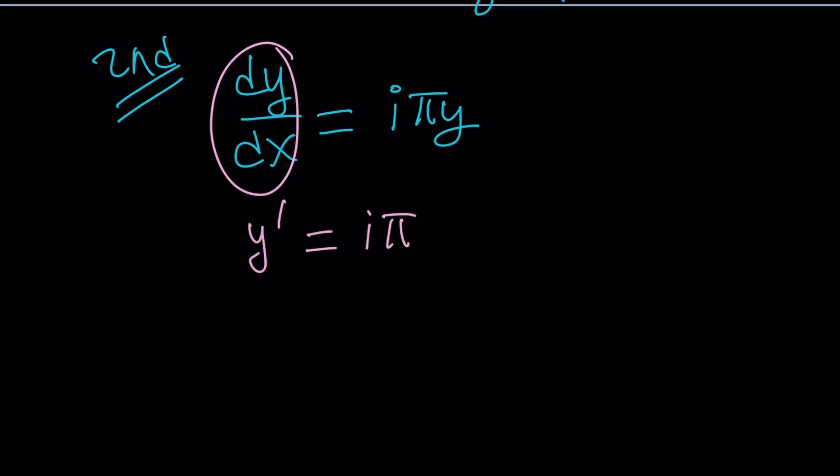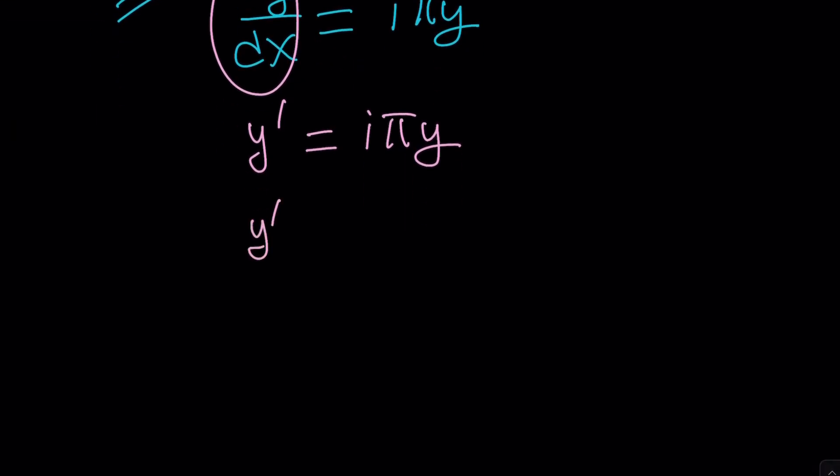Now, I want to write dy/dx as y'. And there's a good reason behind that. I'm not going to separate the variables. But I'd like to bring the y over to the left-hand side. And I want to write this quotient: y'/y = iπ. Now, think about it for a second. Why did I do this? Because I'll talk about it. There's a good reason behind this. Pause the video if you don't want to hear the reasoning. But the reason why I did this is because I know that y'/y is the derivative of something.